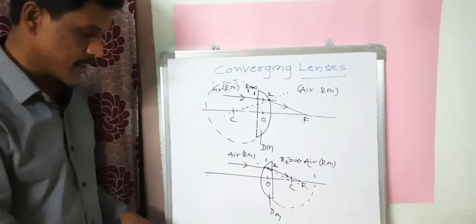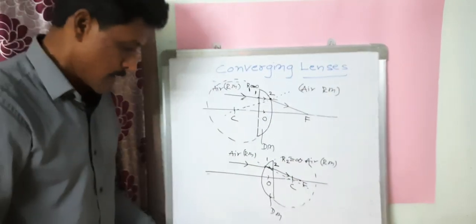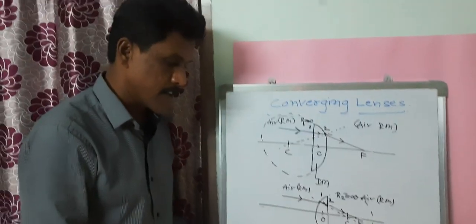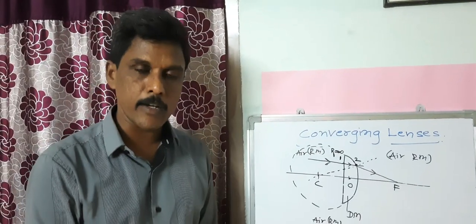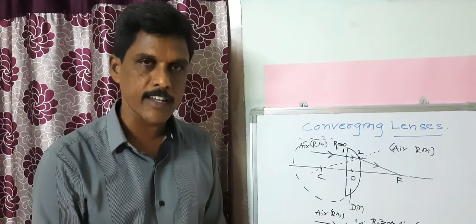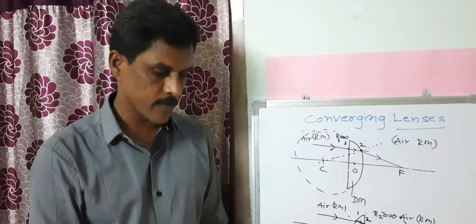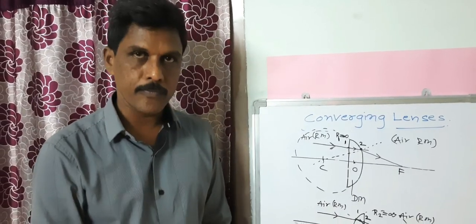From this demonstration and explanation, we understood that a convex lens and a plano-convex lens are both convergent in nature. Thank you.